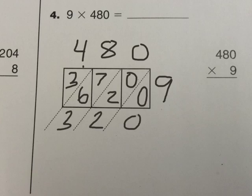Now your 1 comes up here as part of this place. And now 1 plus 3 is 4. So now your answer is 4,320.